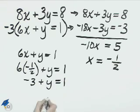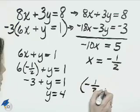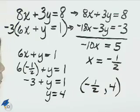Then adding 3 to the right, y is equal to 4. The system has this solution, negative 1 half comma 4.